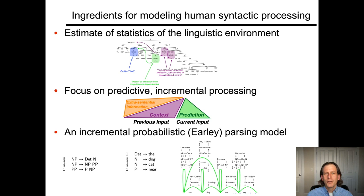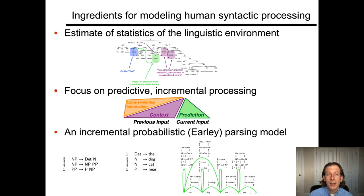A second ingredient is a focus on predictive incremental processing. Humans don't take in large swaths of text and then start to do analysis in their minds. We're actively and aggressively analyzing and incorporating each little bit of input moment by moment as we get it through our eyes in reading, through our ears in listening, or our eyes in signed language — reconciling that input with preceding context, updating the context and moving on. Third, we have a formalized model of this predictive processing based on the kinds of statistics that exist in the environment.